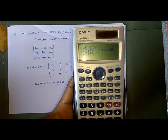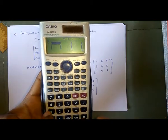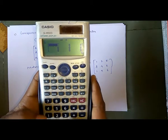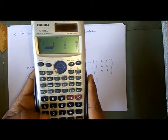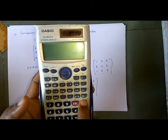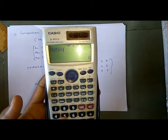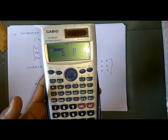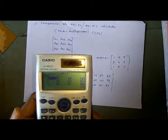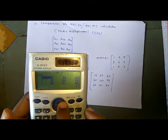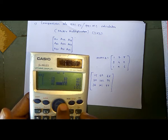Again press Shift Matrix and insert dimensions for matrix B. This second matrix is also 3×3, so press 1. Enter: 1 equals, 7 equals, 8 equals, 3 equals, 4 equals, 2 equals, 1 equals, 9 equals, 6. Press AC. Now multiply matrix A by matrix B: press 3, multiply by Shift Matrix, press 4. The answer appears: 15, 62, 46, 30, 122, 94, 36, 101, and 88 — same as the 991 MS result.